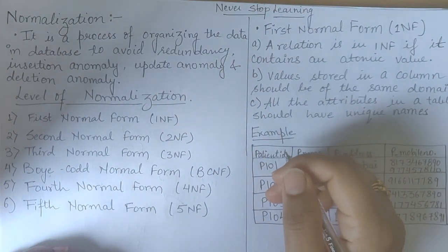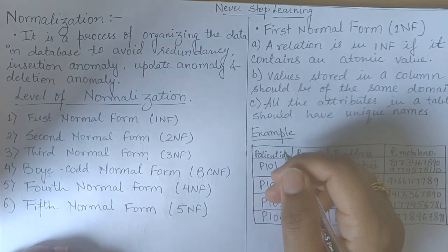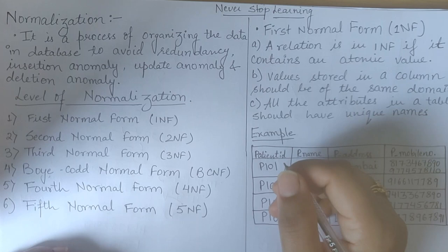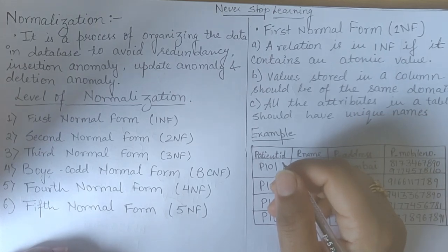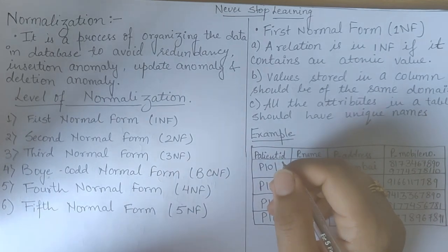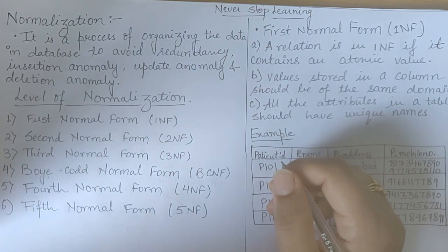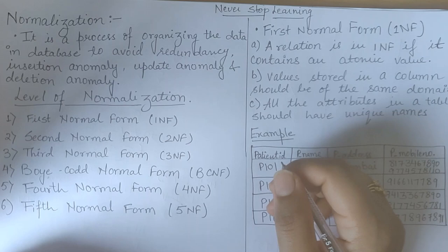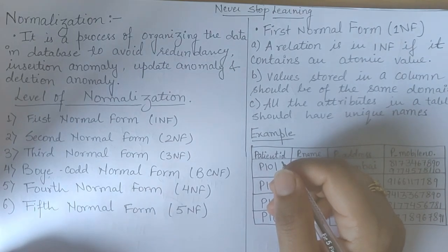Hello everyone. In the series of learning database management systems, today's topic is normalization. The prerequisites for this topic are redundancy, functional dependency, and how to find the closure of a set of attributes. Before going through this lecture, I request you to follow the previous lectures so you can understand better.